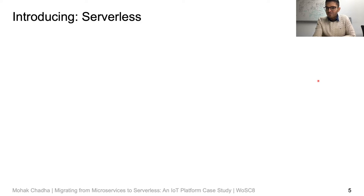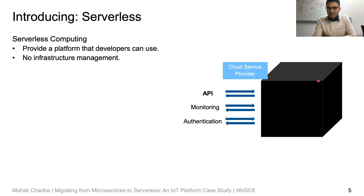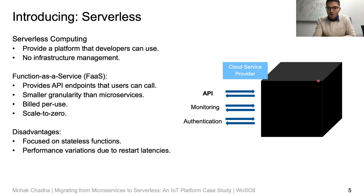Another competing cloud computing paradigm is serverless computing, also known as Function-as-a-Service (FaaS), in which users are only responsible for writing small pieces of code, while all infrastructure management is handled by the cloud service provider, essentially like a black box. In FaaS, developers deploy their functions on the FaaS platform and obtain an API endpoint through which the function can be invoked. Traditionally, functions are more fine-grained than independent microservices. Moreover, most FaaS platforms follow a more fine-grained pay-per-use billing policy. FaaS traditionally has better resource utilization with scaling to zero for idle function instances. However, functions are stateless and there are significant performance variations due to cold starts.